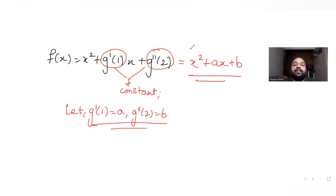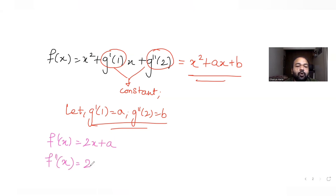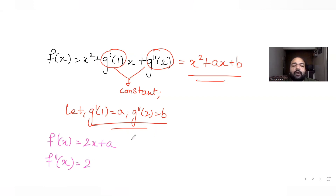Now I differentiate f(x) = x² + ax + b. So f'(x) = 2x + a, and f''(x) = 2, since the derivative of a constant is zero. So I now have both f'(x) and f''(x).